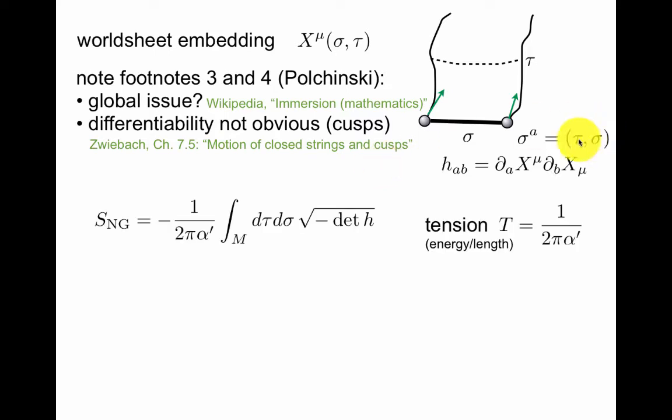You take these two coordinates, tau and sigma, a goes from 1 to 2, or 0 and 1 in this case, and you form an induced metric. So you differentiate the embedding function X^μ with respect to these two variables, giving you a 2 by 2 matrix, 2 by 2 metric, on this worldsheet.